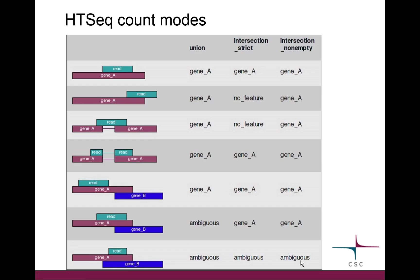Remember, if you have stranded data you can count ambiguous cases. So when you are ordering sequencing data, if you have the option to get stranded data, it's a very good idea. At least in Finland nowadays that's what they produce by default, and you don't even have to pay extra for it — it used to be more expensive, but now it's the same price.